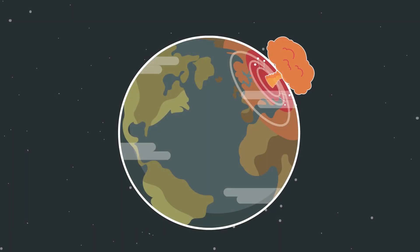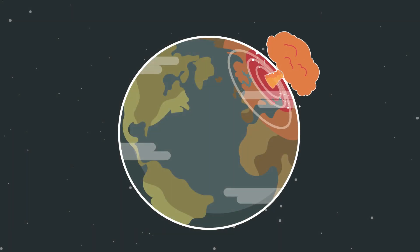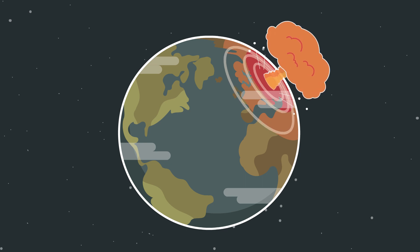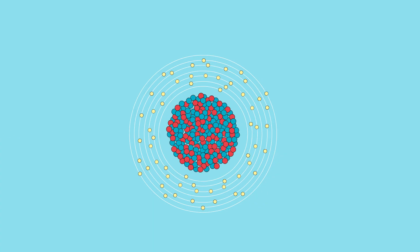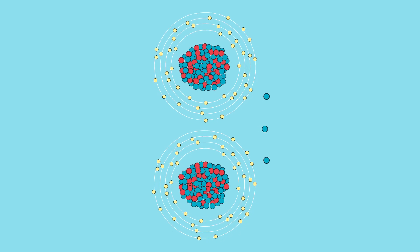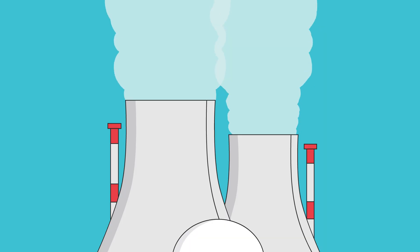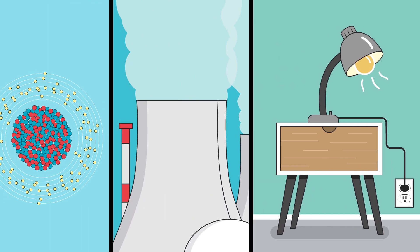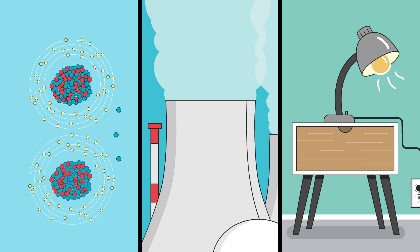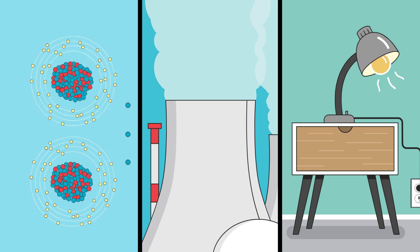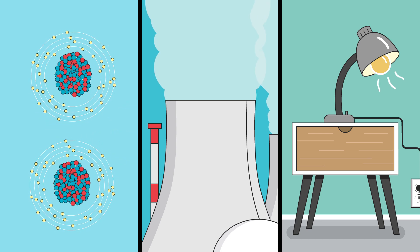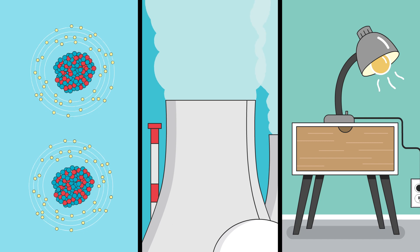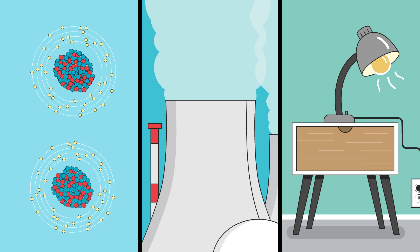But like energy, mass can't be destroyed. The amount of mass and energy always stays constant. We can turn matter into kinetic energy, which can spin turbines, generating electrical energy. We can use that electrical energy to power a lamp, giving off heat and light. But when you add it all up, the total mass and energy in the system stays constant. Nothing is lost, and nothing is created — it just changes form.